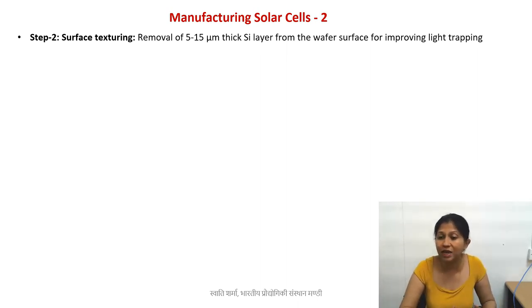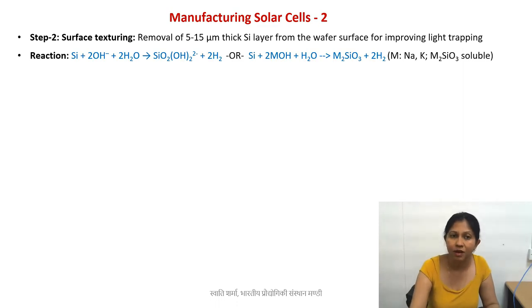Here we are increasing surface area, but the goal is to capture incident light at different angles and minimize losses caused by complete reflection. Since our previous step was wet etching with alkaline solution, we can further use this alkaline solution for this next step.